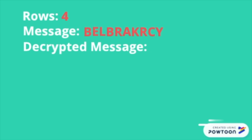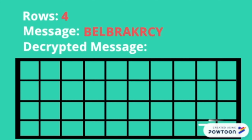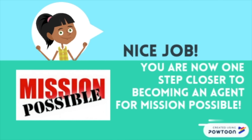Draw a table that has four rows and ten columns because the message is ten letters. Place the first letter in the top left corner, then draw dashes in a zigzag pattern as shown. Add the letters from the message where the dashes are, from left to right starting in the top row. The final decrypted message is 'blackberry.' Nice job everyone — you are one step closer to becoming an agent. Mission possible!